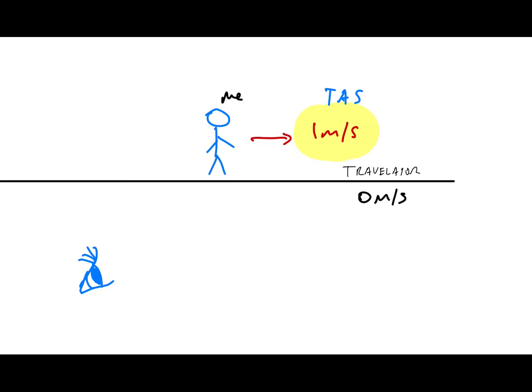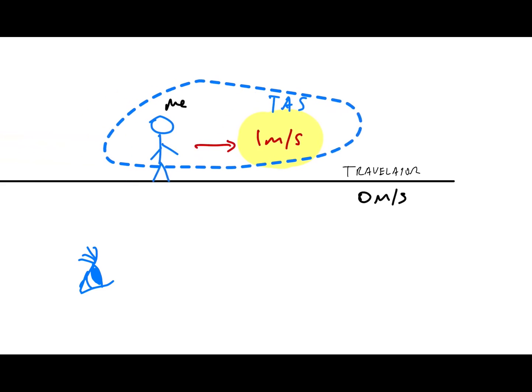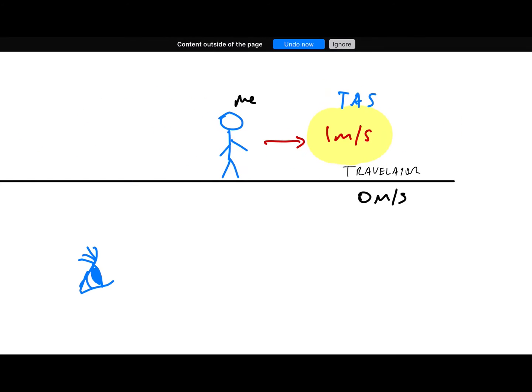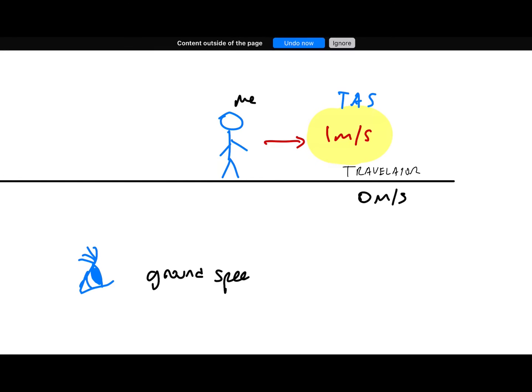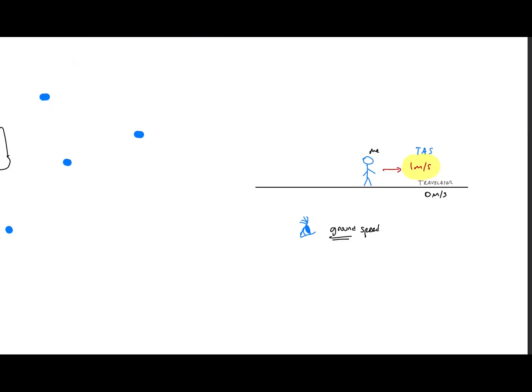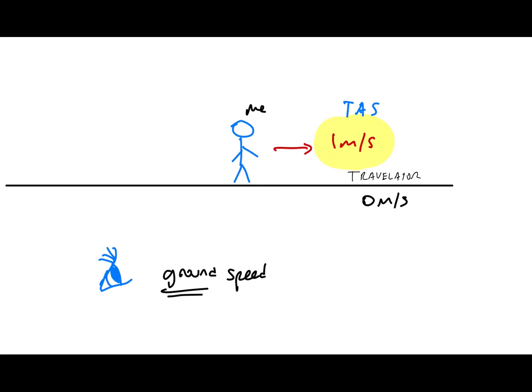That's the speed I'm walking relative to the travelator — the mass of air. Now, imagine a third observer standing to the side, not on the travelator, watching me. Relative to the ground, I'm still moving at one meter per second. That is how you get ground speed — the speed you are relative to the ground. True airspeed is relative to the air, but for the ground observer the reference point is different.